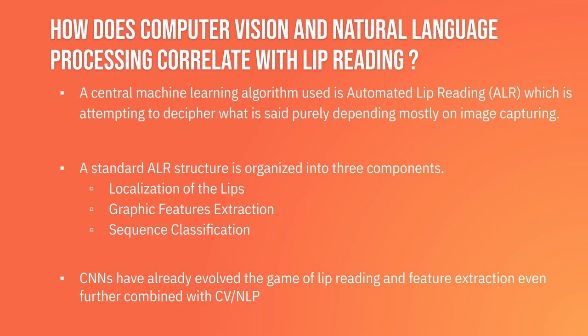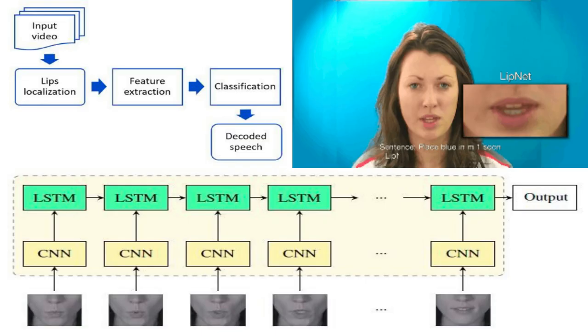CNNs or convolutional neural networks have elevated research by combining with the computer vision and NLP models. Redirecting your attention to the top left, you can see the lip localization, feature extraction, and classification — the basic ALR structure. You can see the input video is fed in, and then the decoded speech or visemes are outputted. The top right shows some models — LipNet is a model created by researchers to read lips using ALR.